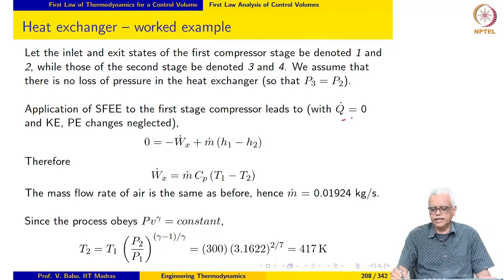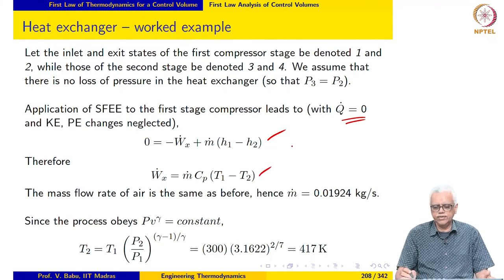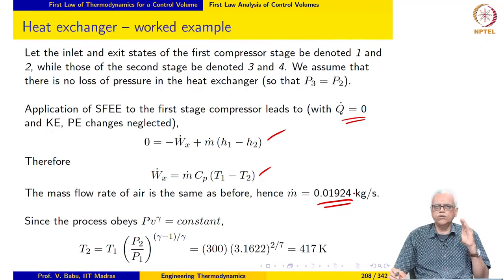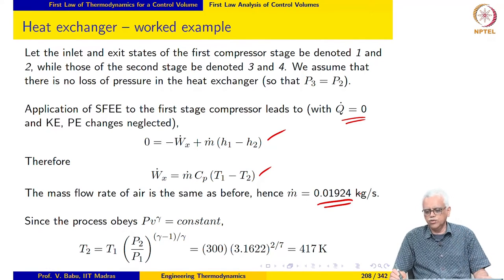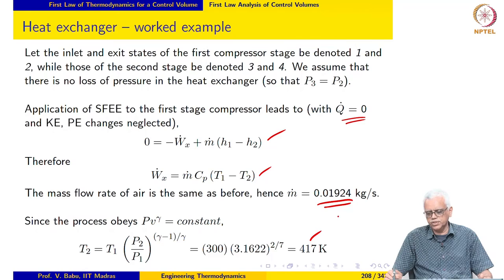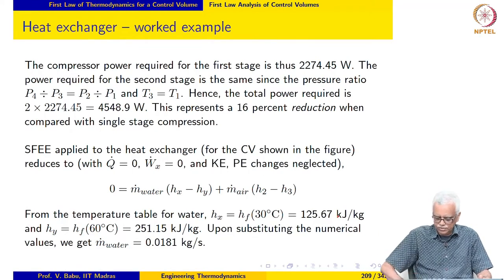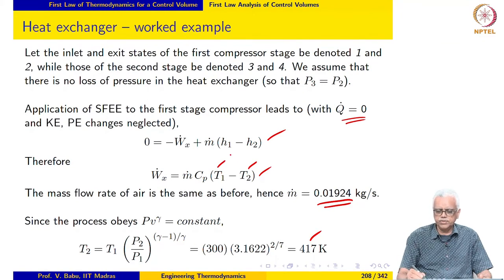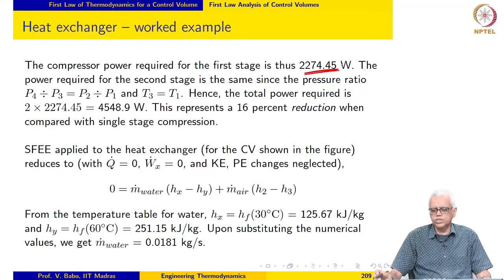Applying the steady flow energy equation to the first stage compressor with Q-dot equal to 0 (insulated) and KE and PE changes neglected, we get an expression that, since air is an ideal gas, becomes m-dot times Cp times (T1 minus T2). The mass flow rate is the same as before at 0.01924 kg/s. Since the compression process obeys PV raised to gamma equals constant, the temperature at the end of the first stage compression is 417 Kelvin. Substituting these values, the compressor power for the first stage is 2274.45 watts.